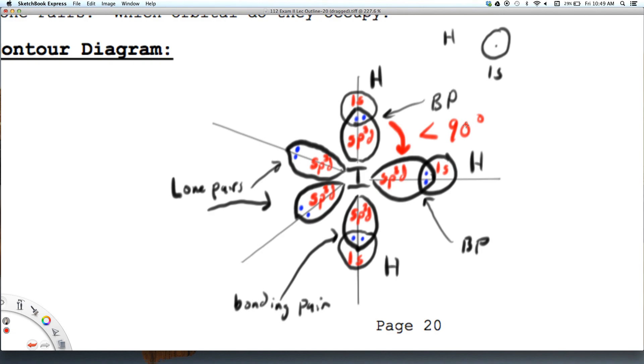So now we have a picture of the contour diagram of IH3 in which we have sp3d, that is 5 orbitals, 2 of which are non-bonding or unshared or lone pairs and 3 of which are bonding pairs.